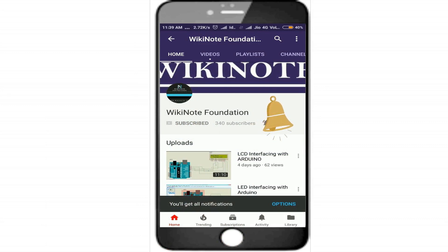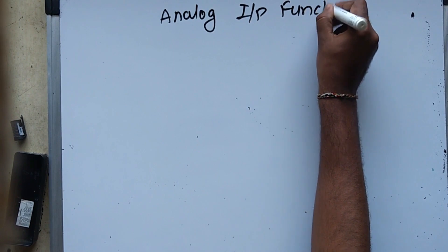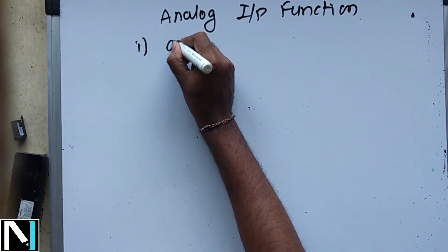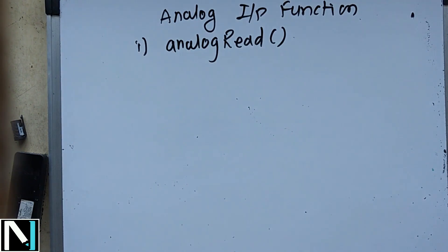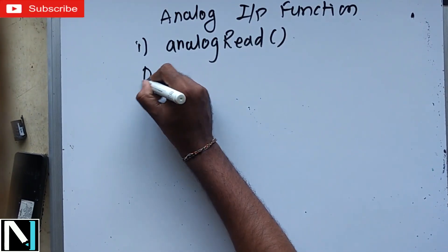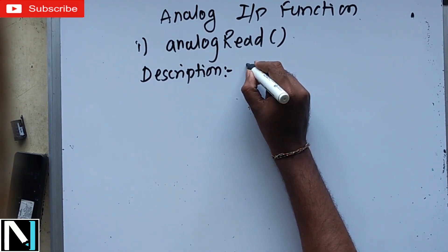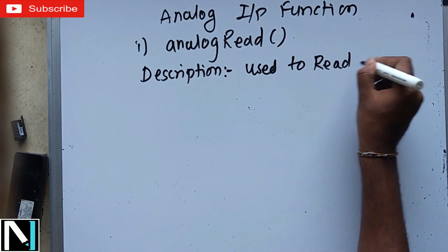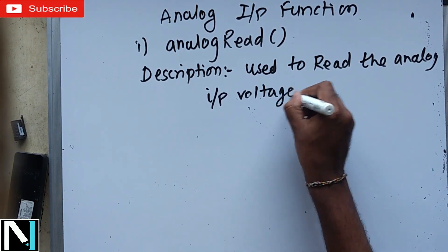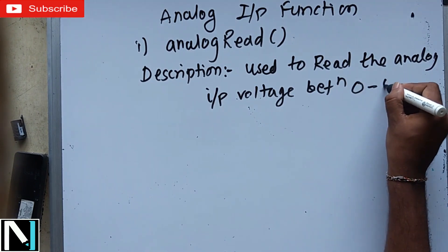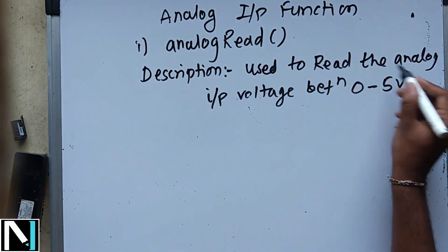The first analog input function is analogRead. You have to write the answer in this format: first write down the description of the function. This function is used to read the analog input voltage between 0 to 5 volts, and will convert this voltage value into a decimal value.